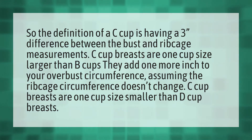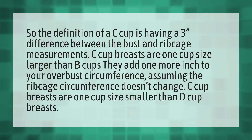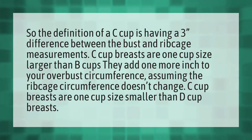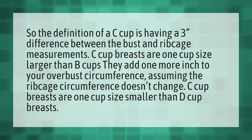The definition of a C cup is having a three-inch difference between the bust and ribcage measurements. C cup breasts are one cup size larger than B cups, adding one more inch to your overbust circumference, assuming the ribcage circumference doesn't change. C cup breasts are one cup size smaller than D cup breasts.